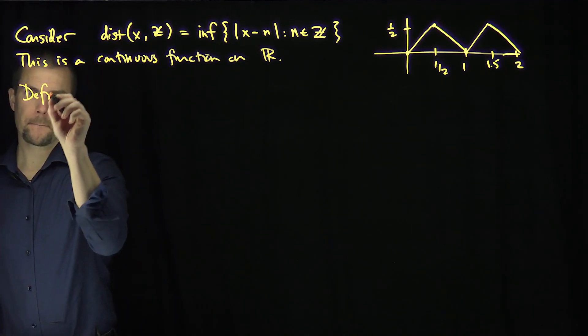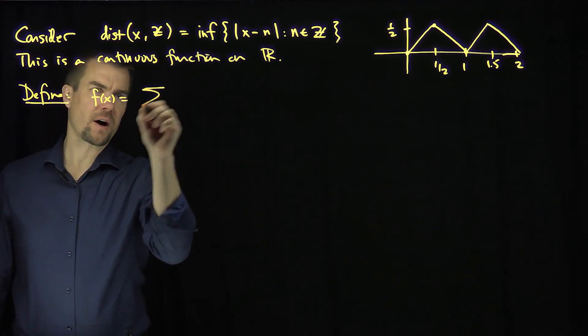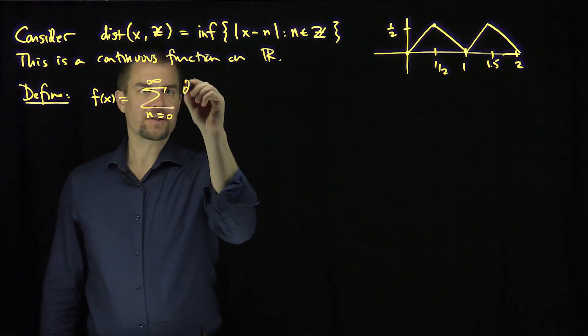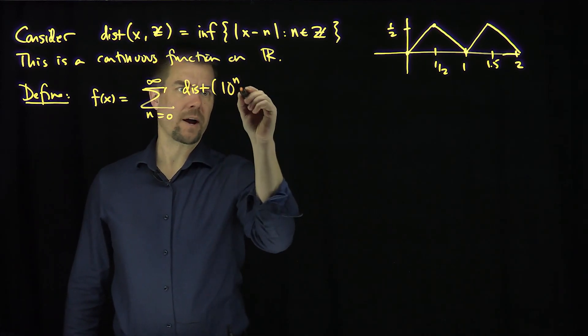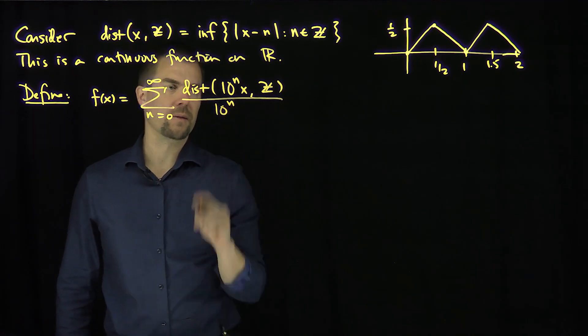Define f(x) to be the sum, n goes from zero to infinity, of the distance from 10^n x to the integers, over 10^n.